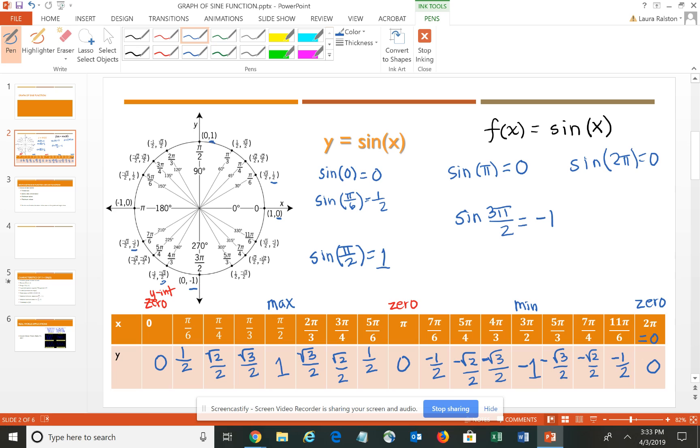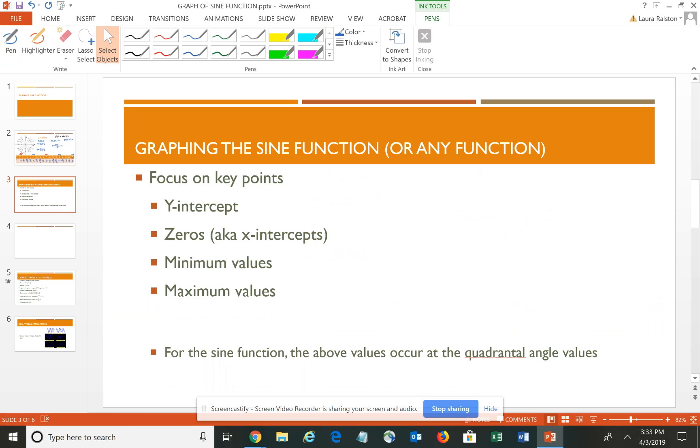I pointed out those points where you have 0's and the maximum and the minimum because those are typically the points that we focus on at least initially when we're trying to create the graph of the sine curve. As you get ready to graph the sine function – or really any function – you want to focus on your key points. Typically those key points are going to be your y-intercept, your 0's (also known as your x-intercepts), your minimum values, and your maximum values. For the sine function, those particular values typically occur at your quadrantial angle values.